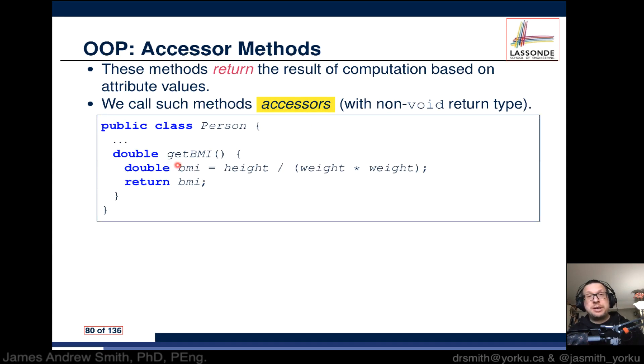Here's an example. We want to get the person's BMI. Here's a method, a function, has a return type of double. What we have here is an equation that says BMI is equal to the person's height times their weight multiplied by their weight, with division. We return that value. We are accessing something about the person.